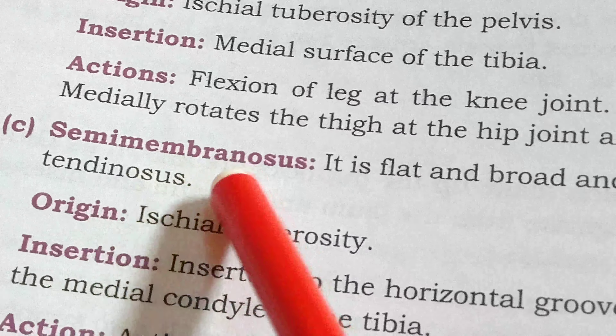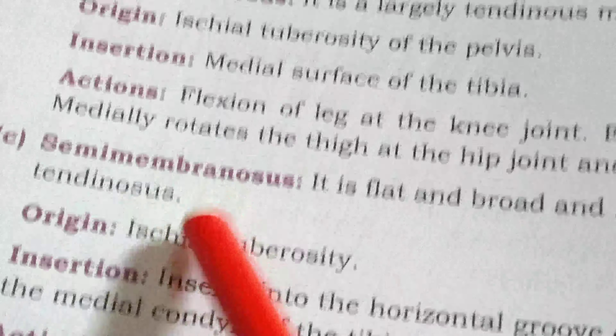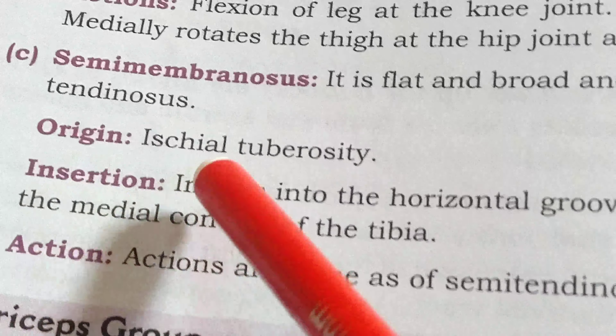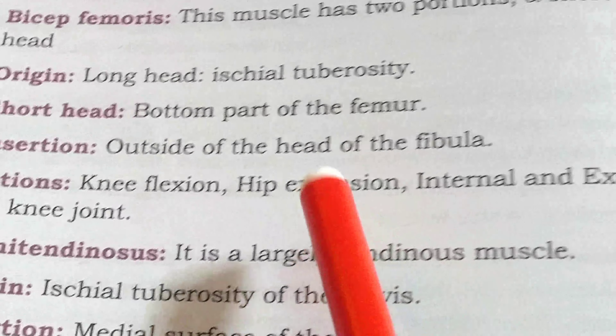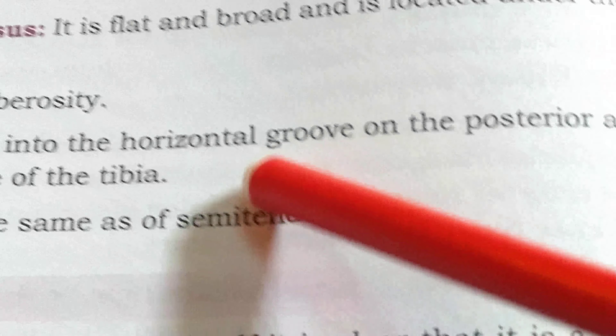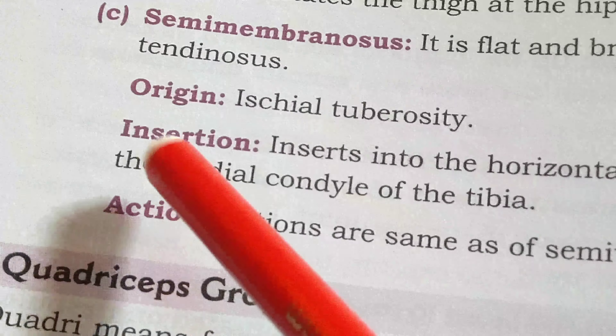The last hamstring muscle is semimembranosus. It is a flat and broad muscle located under the semitendinosus. Its origin is the ischial tuberosity — so all three hamstring muscles originate from the ischial tuberosity. It inserts into the horizontal groove on the posterior aspect of the medial condyle of the tibia, stretching from the ischial tuberosity to the tibia.